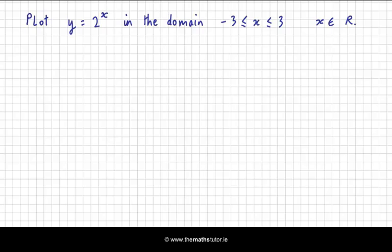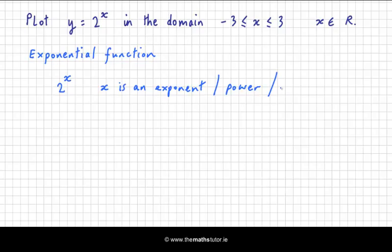Why do we call this an exponential function? Let's write the word down. We call it an exponential function because the variable in the function x is the exponent. An exponent is the same word as power or index. So we have 2 to the power of x, where x is an exponent, or we can call it a power, or we can call it an index. All of these words mean the same thing. So where the variable is a power, or an exponent, we have what's called an exponential function.